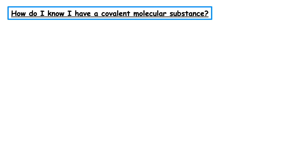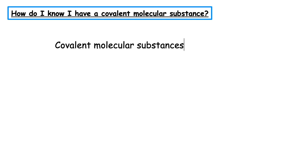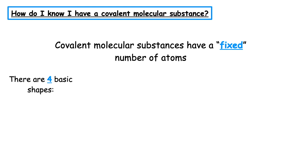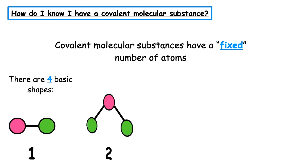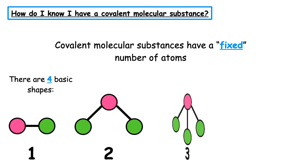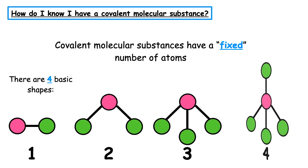So how do I know if I've got a covalent molecular substance? Covalent molecular substances have a fixed number of atoms and can be represented by one of four shapes: linear, angular, trigonal pyramidal and tetrahedral.